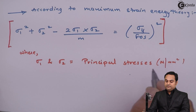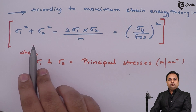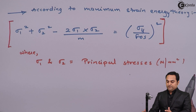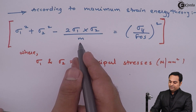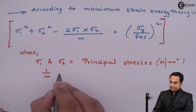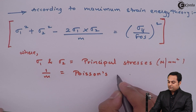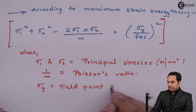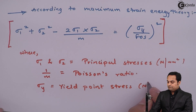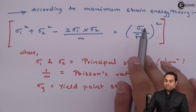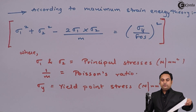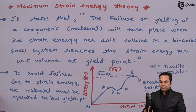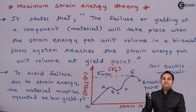As we can see in this formula, we do not have shear stress, which means this theory can be used only for ductile materials. Here, 1 upon m is called Poisson's ratio, and Sigma Y is called the yield point stress. So in this video we have seen the Maximum Strain Energy Theory, how to avoid failure, and where it is applicable — it is applicable for ductile materials.